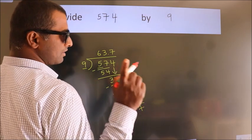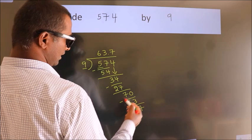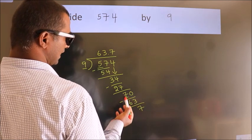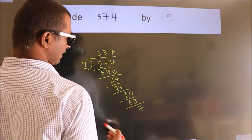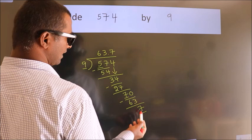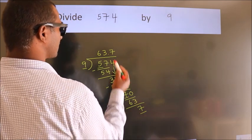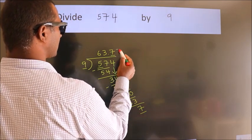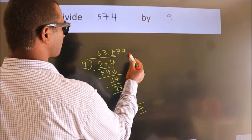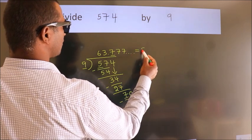Now you observe, here we had 7 and we got 7 again. That means this number keeps on repeating. So this is our quotient.